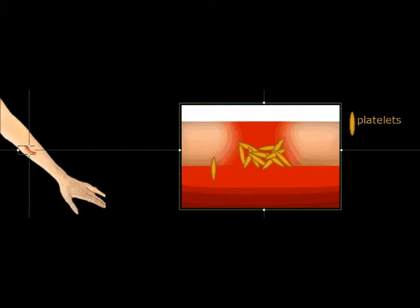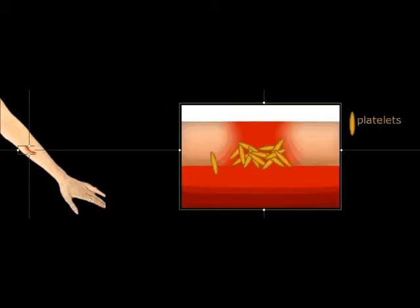Platelets are small fragments of cells. They have no nucleus and are made in the bone marrow. Their job is to help the blood to clot at a wound.